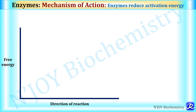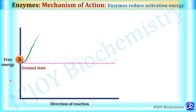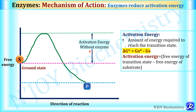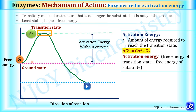In the mechanism of action of enzyme, enzymes work by reducing activation energy. On a free energy diagram, in the uncatalyzed reaction, the substrate must overcome a large activation energy barrier to reach the transition state and form product. Activation energy equals the free energy of the transition state minus the free energy of the substrate. The transition state is the transitory molecular structure that is no longer the substrate but not yet the product — it is the least stable but highest free energy state.